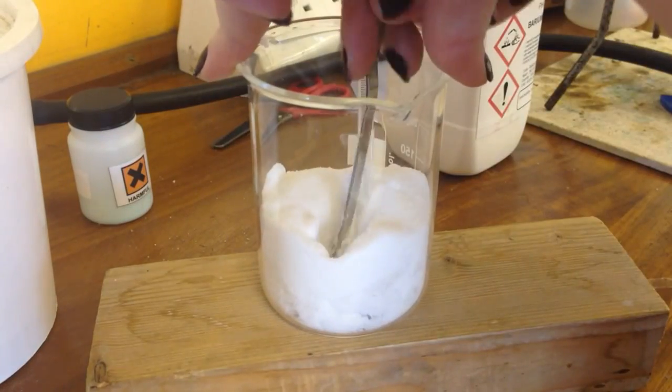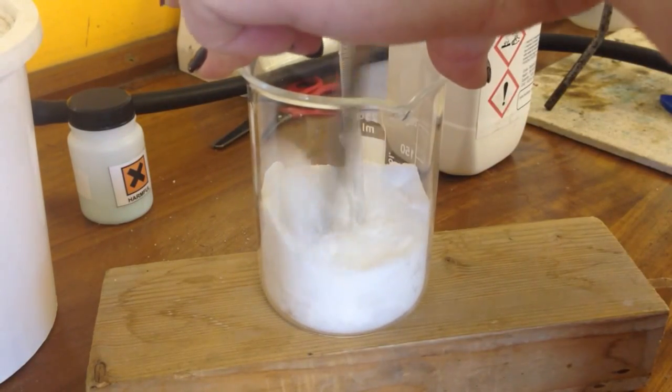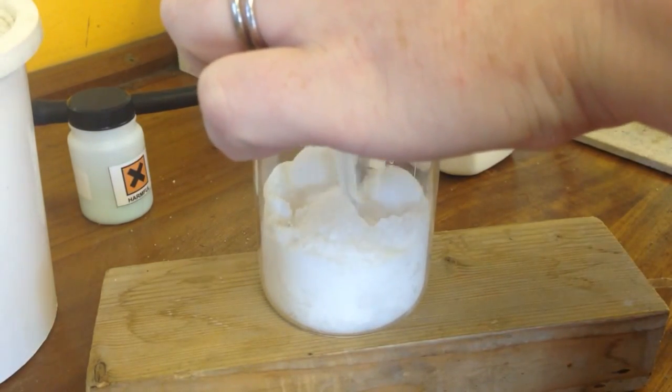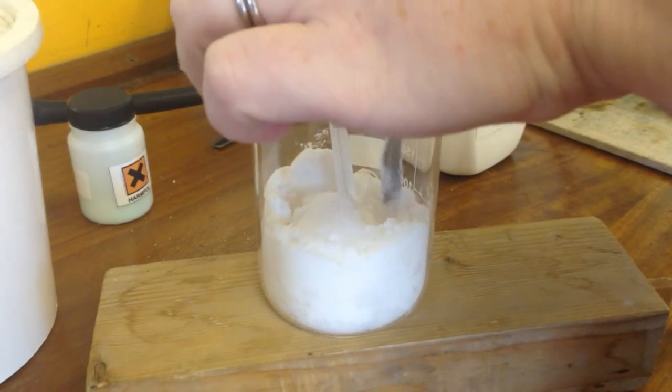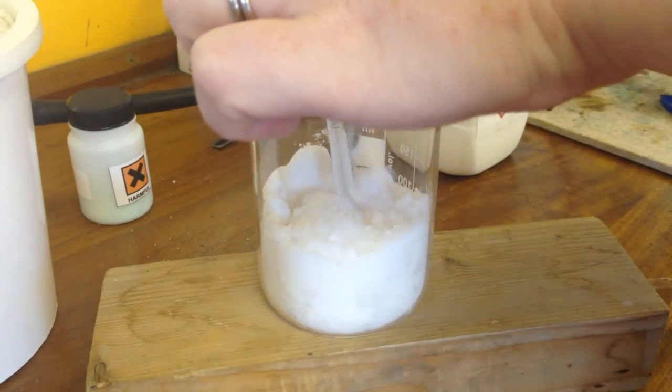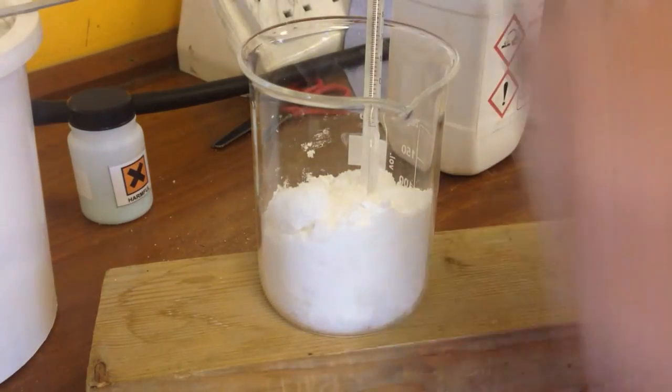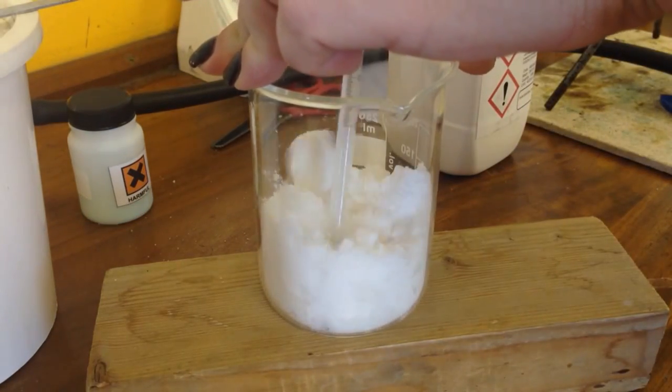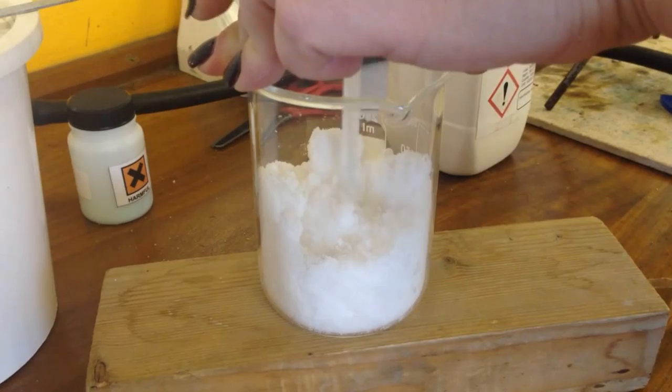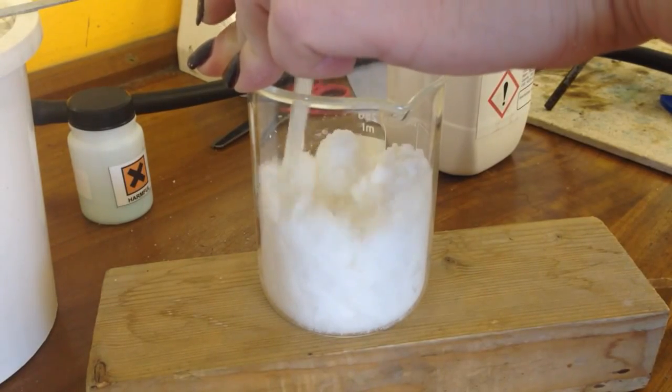So I'm just going to mix this up. It's quite hard to mix at first because I'm trying to mix two powders together. One of which is quite lumpy and the other one is quite fine. So they don't really want to mix up. Let me use my thermometer. It's really starting to smell quite strongly of ammonia now.